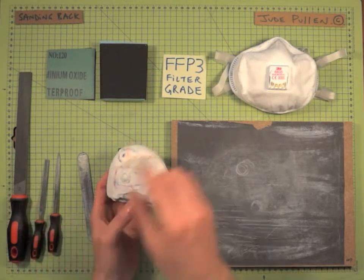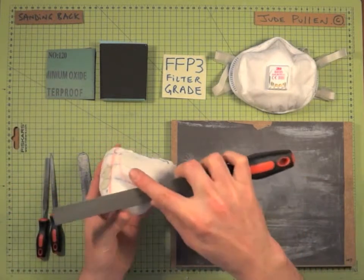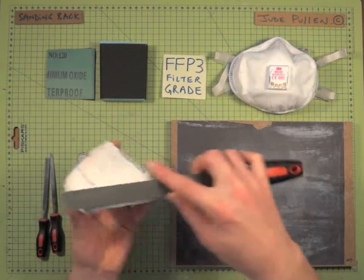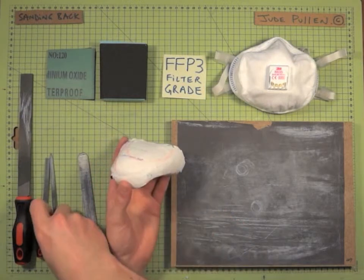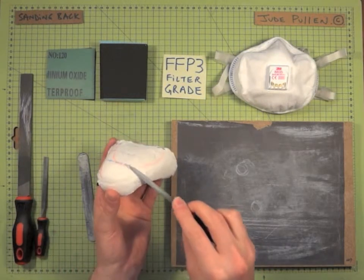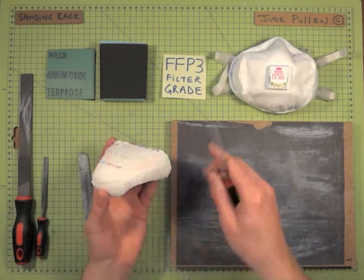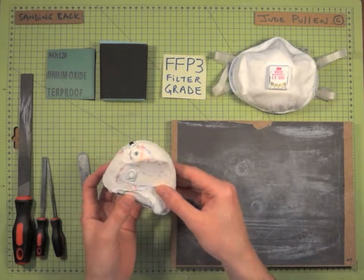A couple of tips: I'm going to be working first with the files, and it's a good idea to use long sweeping motions. The reason being is that you want to give the form continuity. If you just use a very tiny file and keep working like that, you won't have this nice clean surface. You'll have an undulating surface which will look less pleasing to the eye.